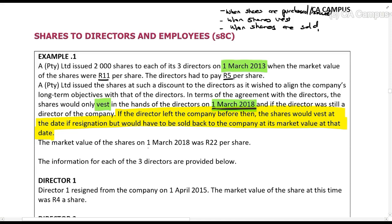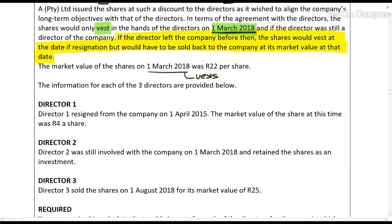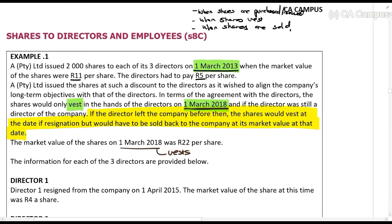The market value of the shares on the 1st of March 2018 (when they vest) was R22 per share. Now let's look at Director 1. On the 1st of March 2013 he gets 2,000 shares — he pays R5 per share but the shares are worth R11.